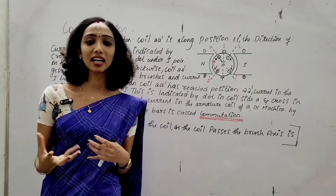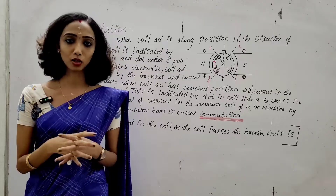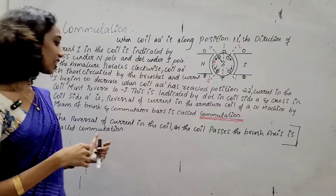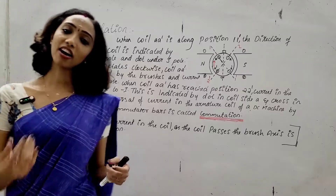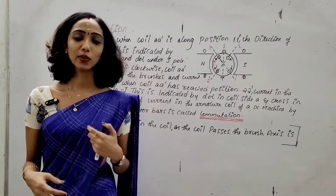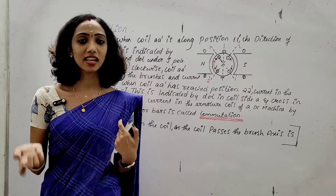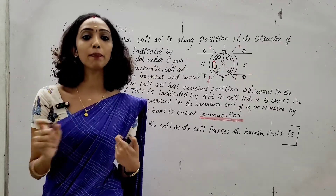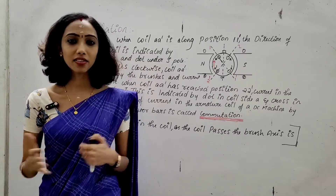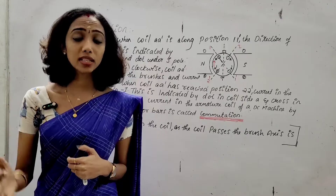How does commutation happen? Simply saying, commutation is the reversal of current in the coil as the coil approaches the brush. Basically, we call this the commutation process.